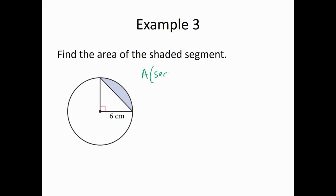So area of sector minus area of triangle. First thing, it doesn't matter which one we do first. I think it's probably easier to find the area of the triangle first. That's just going to be base times height divided by 2. So that's 6 times 6 is 36, divided by 2 is 18. So the area of the triangle is 18.